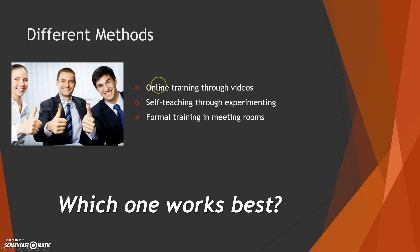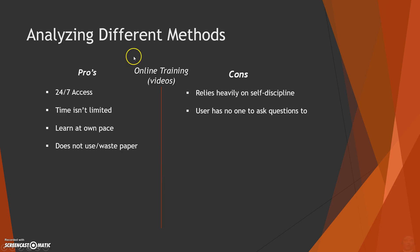There are different methods including online training through videos, self-teaching through experimenting, formal training, and meeting rooms. So which one works the best? For online training, first of all, you have 24/7 access to it — you can access it anytime you want, at home, at work, on weekends. Time isn't limited as you can work at your own pace. For example, watching Khan Academy or Code Academy videos. It also does not waste paper as everything is online.